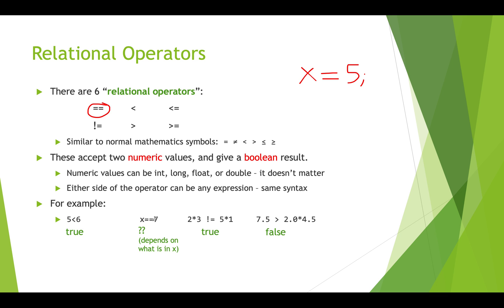Here we have x equals equals 7, so this is a test of equality — we're saying, does whatever is in the variable x equal 7? The result of whether this is true or false depends on what's stored in x. Here we have a couple of mathematical expressions: 2 times 3, and we're testing whether that is not equal to 5 times 1. 2 times 3 is 6, and 6 is not equal to 5, so this turns out to be true. And here we have some floats: is it true that 7.5 is greater than 2.0 times 4.5? Well, that would give 9.0, and 7.5 is not greater than 9.0, so this gives us false.